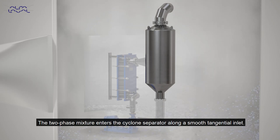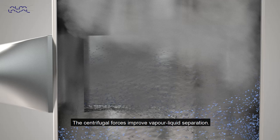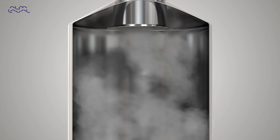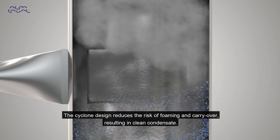The two phase mixture enters the cyclone separator along a smooth tangential inlet. The centrifugal forces improve vapour liquid separation. Low density steam rises from the circulating fluid into the space above where mists and fine droplets are removed. The cyclone design reduces the risk of foaming and carry over resulting in clean condensate.